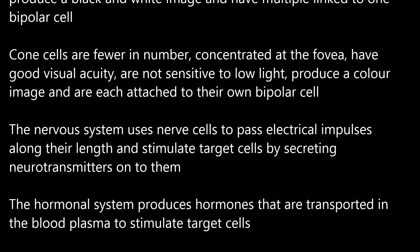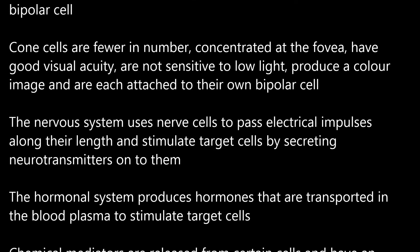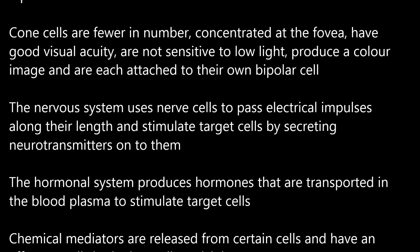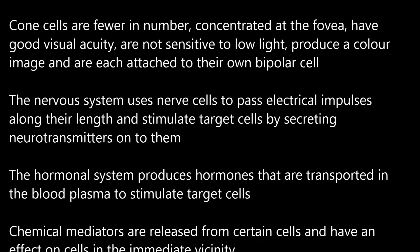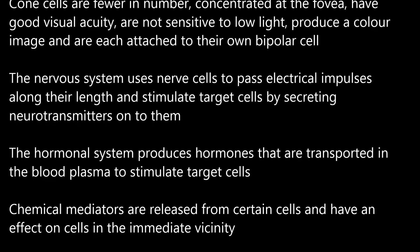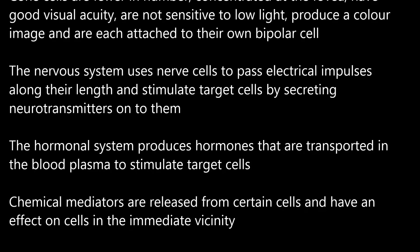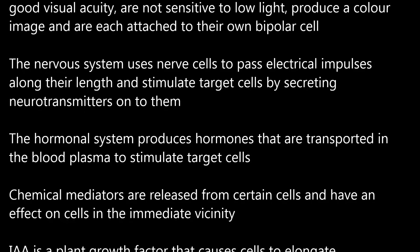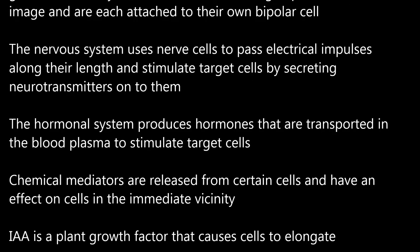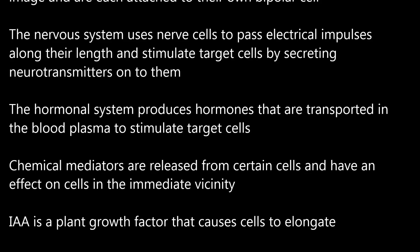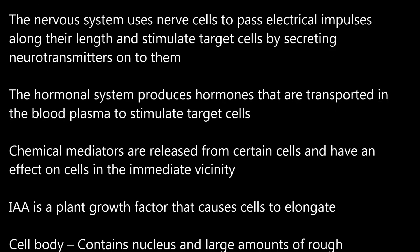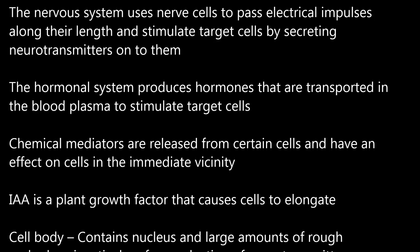The hormonal system produces hormones that are transported in the blood plasma to stimulate target cells. Chemical mediators are released from certain cells and have an effect on cells in the immediate vicinity. IAA is a plant growth factor that causes cells to elongate.